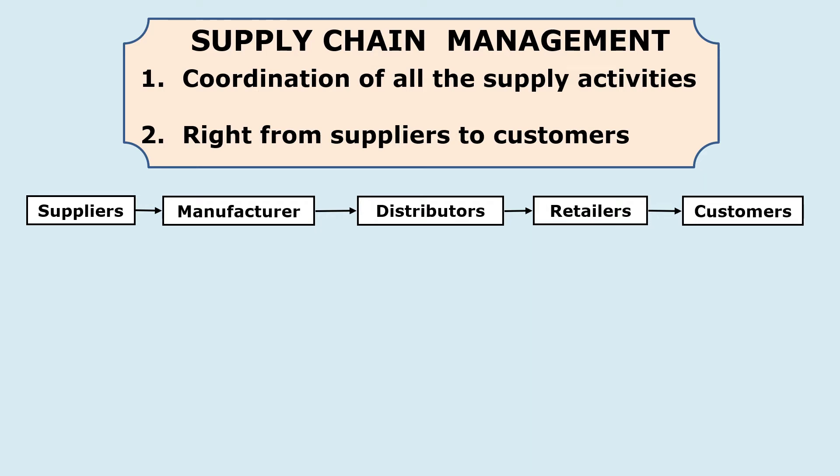As seen in this picture, suppliers send materials to the manufacturer, who may have production plants at different locations. Finished products are then supplied to warehouses of distributors, who in turn make them available to retailers, and retailers reach the products to customers. So supply chain management is the coordination of all these supply activities.